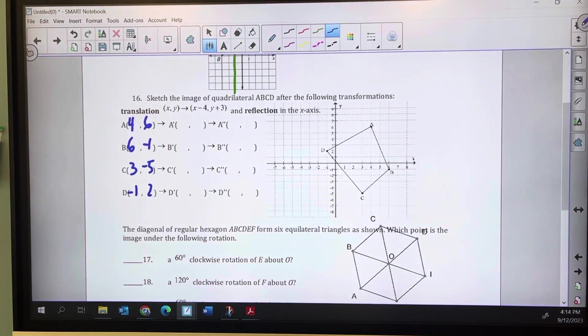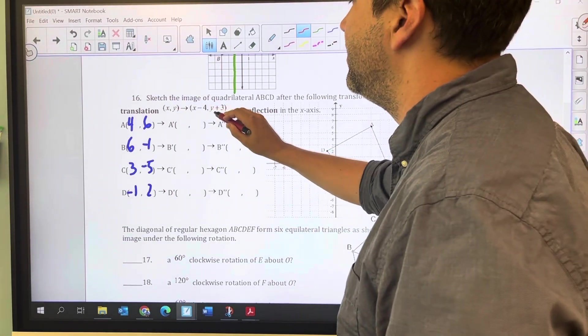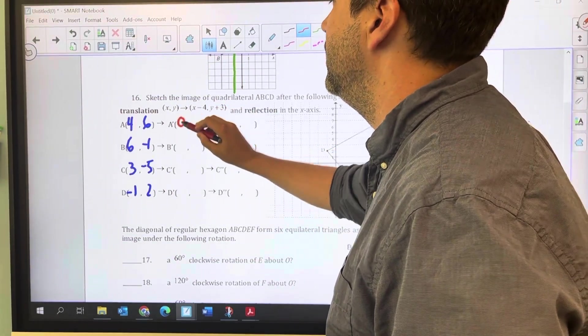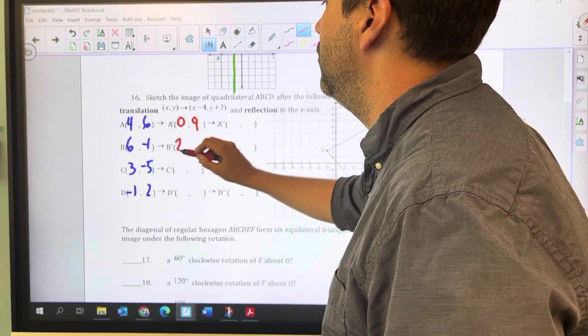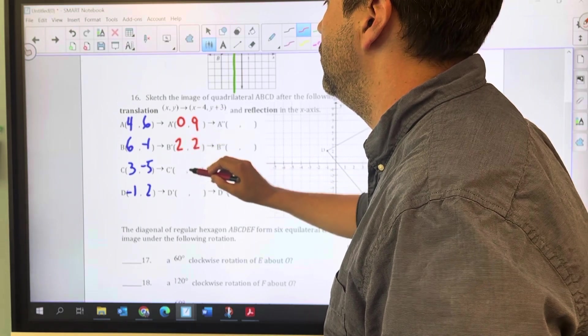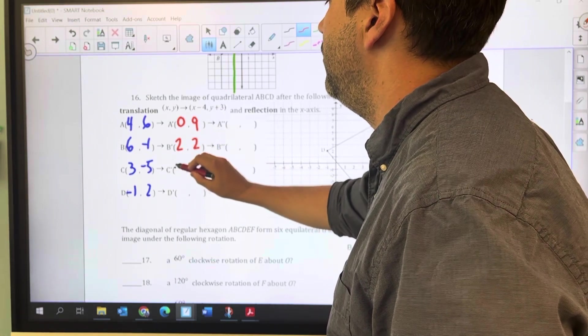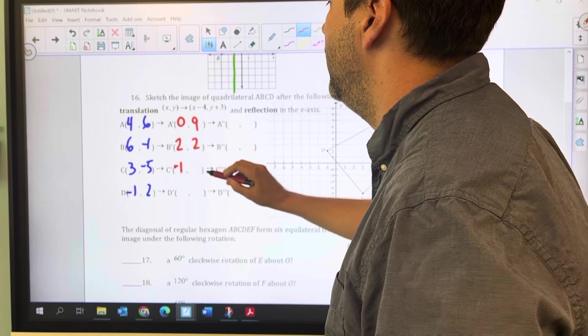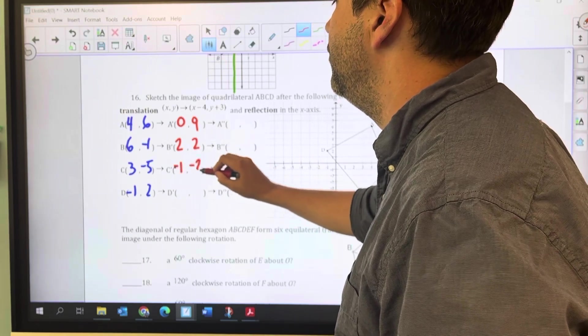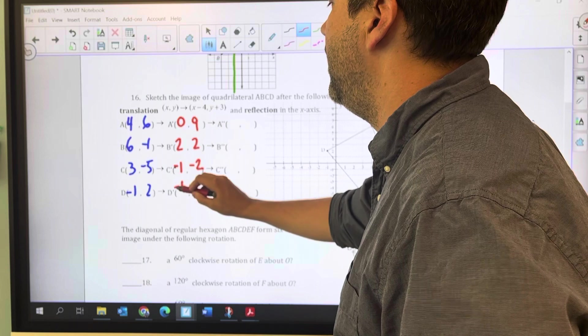That first transformation is a translation, so I'm going to do the operations described: subtract 4 from the x and add 3 to the y. That gives (0,9), (2,2), (-1,-2), and (-5,5).